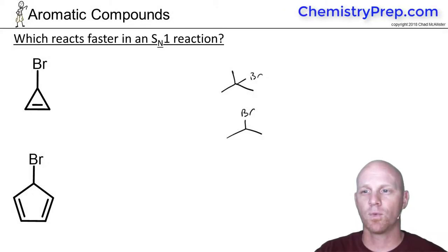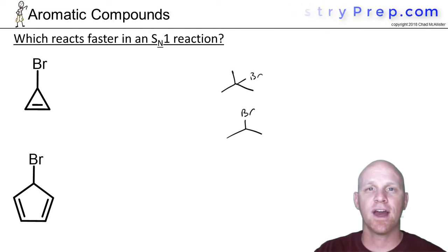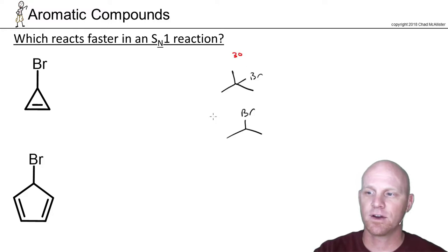Here we've got a question that's drawing back on what you know from SN1 reactions and asks which of these is reacting faster in an SN1 reaction. If you recall, here I've got a tertiary halide and here I've got a secondary halide, and you learned that tertiary halides react faster than secondary halides in SN1.